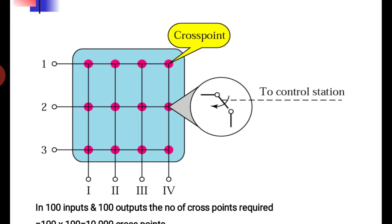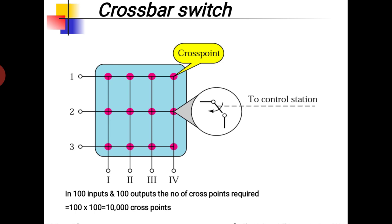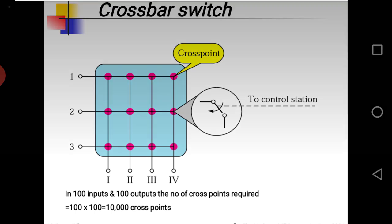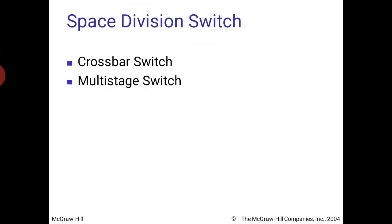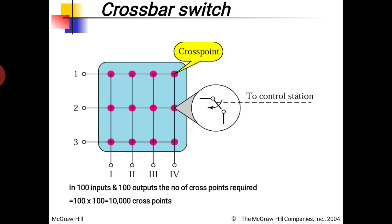If we have 100 inputs and 100 outputs, the number of crosspoints would be 10,000. We cannot practically implement this in telecommunication — if we have 1,000 users in one area and 1,000 in another, we need 1,000 × 1,000 micro switches. Managing such a large number of hardware components is not feasible. However, crossbar switches are still used in parallel processing applications with multiple processors and RAMs.